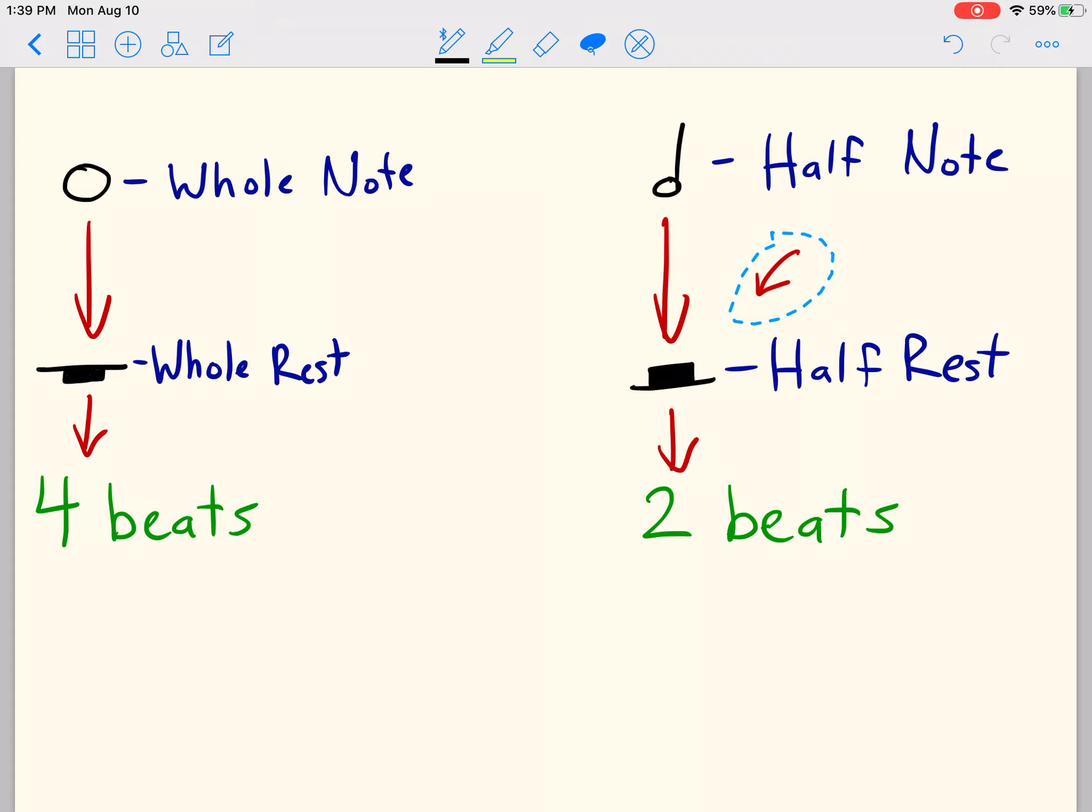Now just because it says it's a rest doesn't mean you're not going to be engaged. Keep in mind that some of the times you need to be the most mentally engaged are during your rests. So you need to be subdividing. In other words you need to be keeping track of how many downbeats there are while you're counting through your half rest so you make sure that you count it accurately. So a half note corresponds to a half rest because they both have two beats. In that same way a whole note corresponds to a whole rest because each of them has four beats.